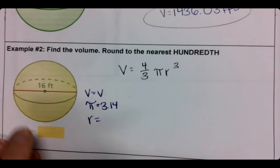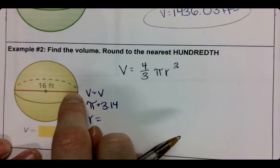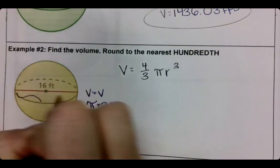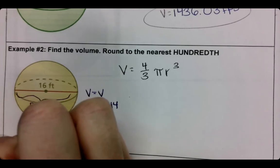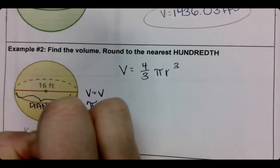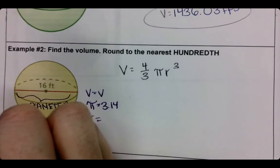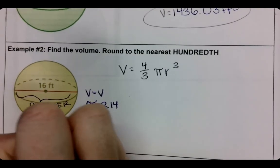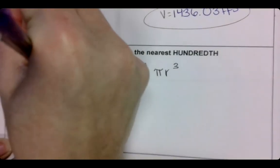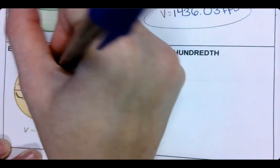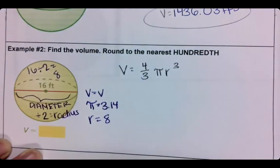So how do I take 16, which is called my diameter, and turn it into my radius? Well, I need to divide it by 2 to get my radius. So 16 divided by 2 equals 8. So that means my radius is 8.